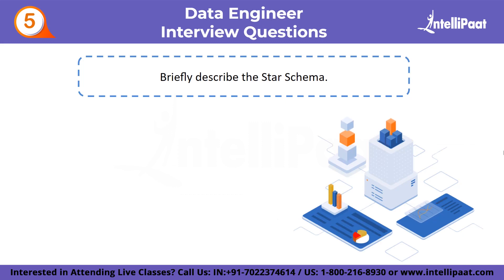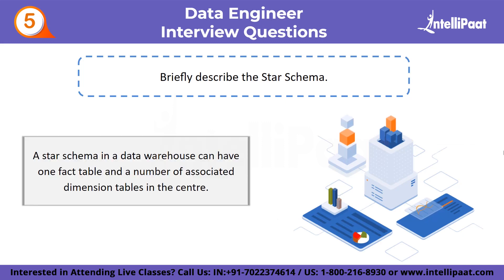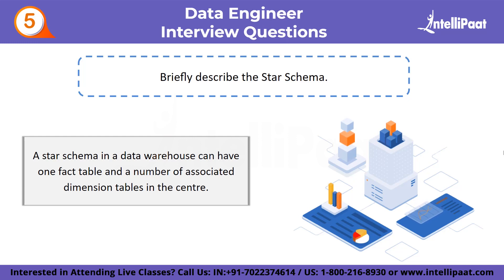Fifth question: briefly describe the star schema. A star schema in a data warehouse can have one fact table and a number of associated dimension tables in the center. It is known as a star schema because its structure is similar to that of a star. The star schema data model is the most basic type of data warehouse schema, also referred to as the star join schema, and is intended for large data sets.